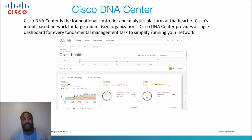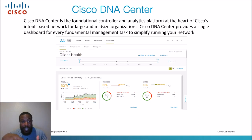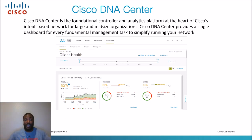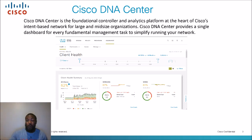Official definition: Cisco DNA Center is the foundational controller and analytics program at the heart of Cisco's intent-based network for large and mid-sized organizations. Cisco DNA Center provides a single dashboard for every fundamental management task to simplify running your network. You can see colorful graphs showing how many healthy wireless clients, wired clients, and so on. You can go back into history and see when your network went down, check logs — it gives you a visual representation rather than just reading through CLI text. It's kind of like being a puppet master, controlling a whole bunch of devices.